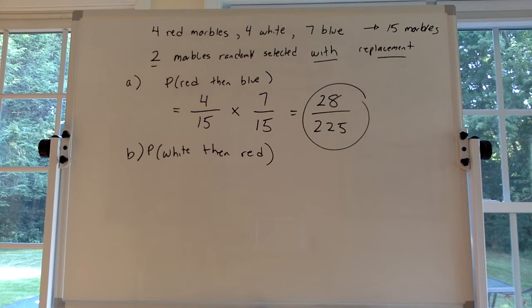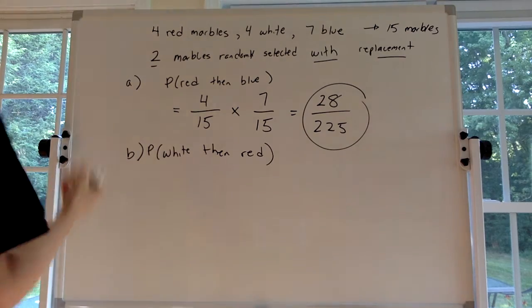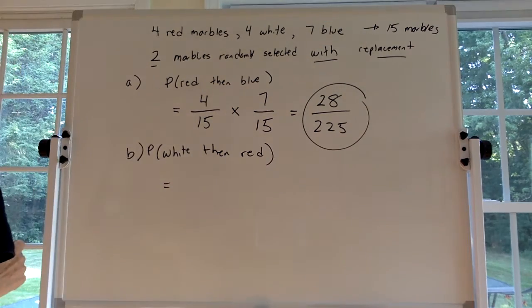Part B wants probably getting a white then a red. Okay, same procedure. We know we have to multiply the two probabilities.